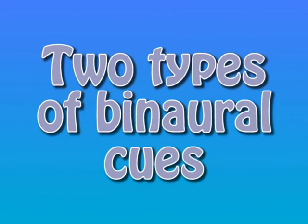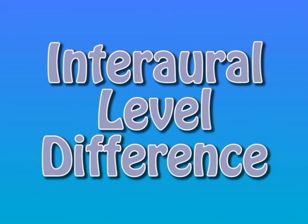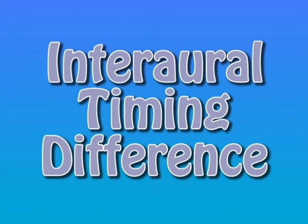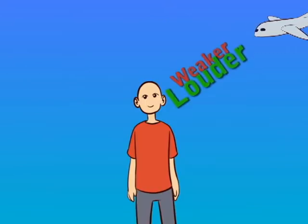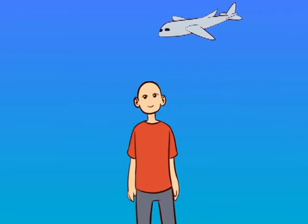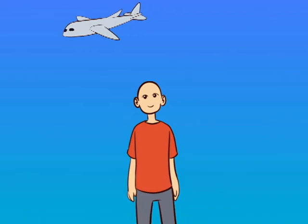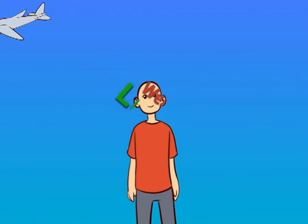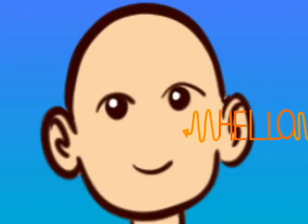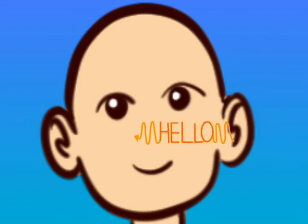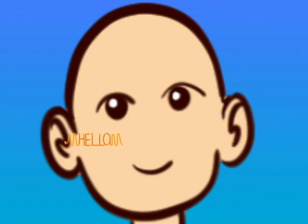There are two types of binaural cues: interaural level difference and interaural timing difference. The first cue refers to how you localize sound based on the difference in intensity between your ears. When sound plays to the right or left of you, it is louder and more intense in the ear closest to the sound source, and weaker in the ear farthest from the sound source. This is because as sound travels through your head, the sound waves get dampened and the intensity level lowers overall.